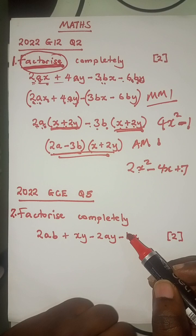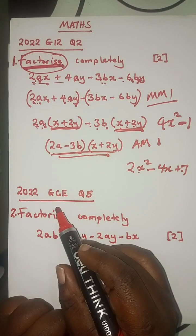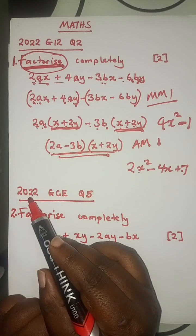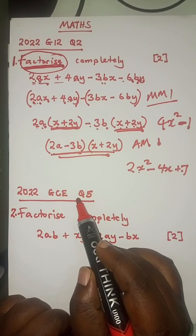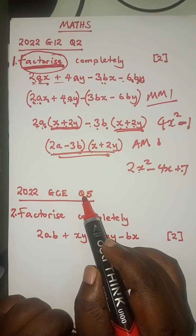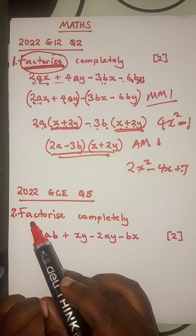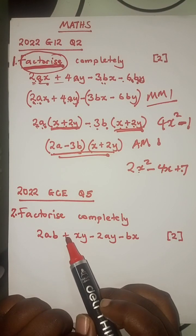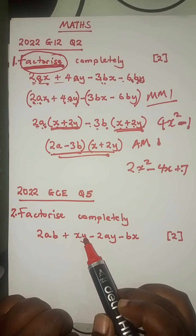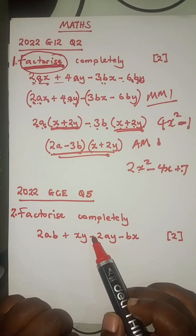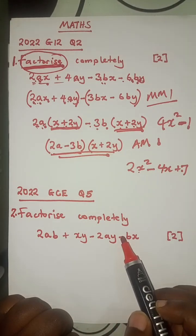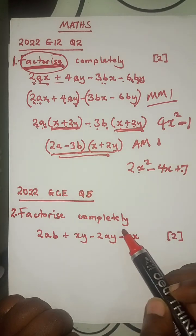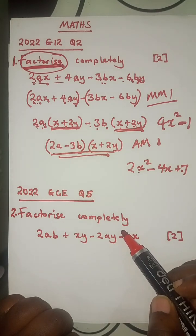Now I'm not going to answer the second question here — this one will be done by you. It is from 2022 GCE question number 5. It says: factorize completely 2AB plus XY minus 2AY minus BX. Two marks. Kindly factorize. Thank you.